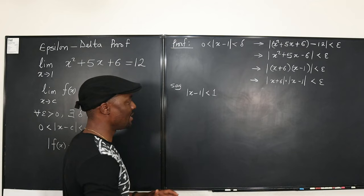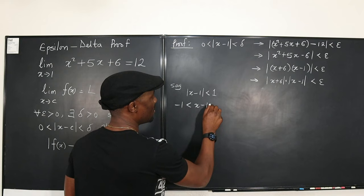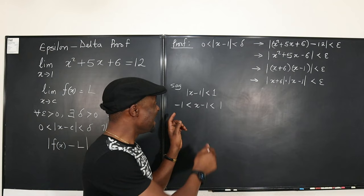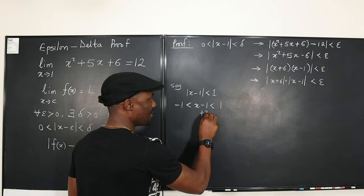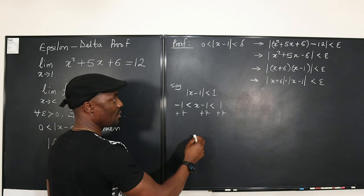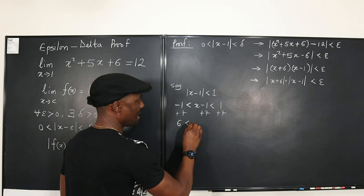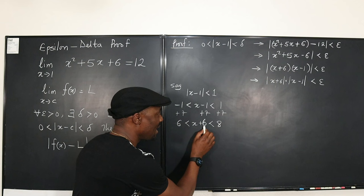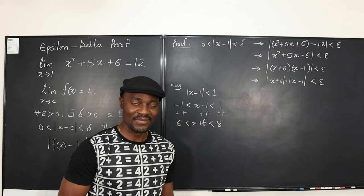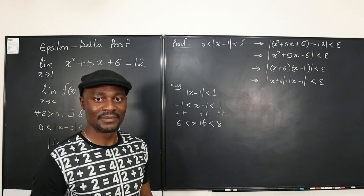From |x − 1| < 1, we get the inequality −1 < x − 1 < 1. We need to bound |x + 6|, not |x − 1|. So add 7 to all parts: −1 + 7 < x − 1 + 7 < 1 + 7, which gives 6 < x + 6 < 8. Therefore |x + 6| < 8, and a good number to replace |x + 6| with is 8.